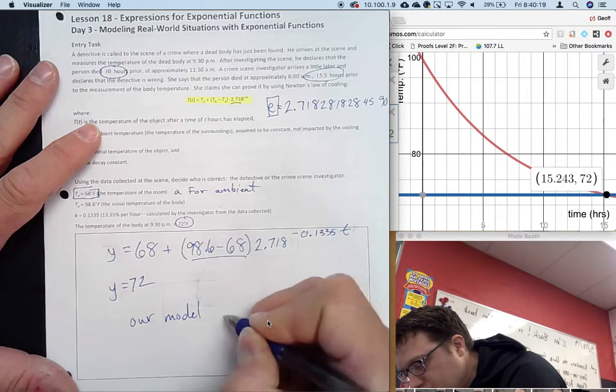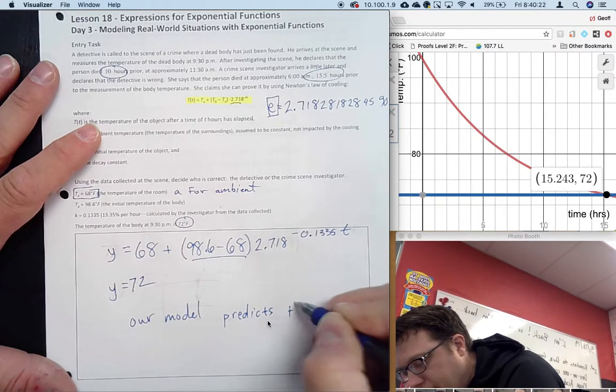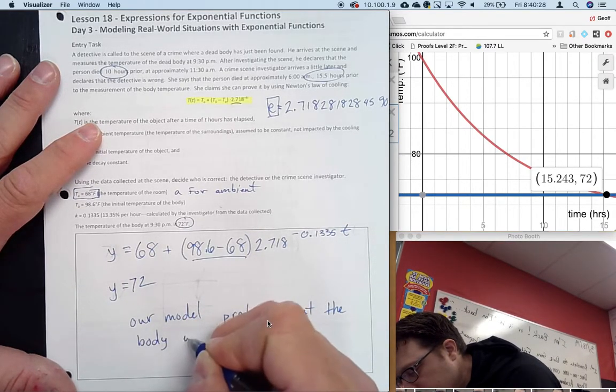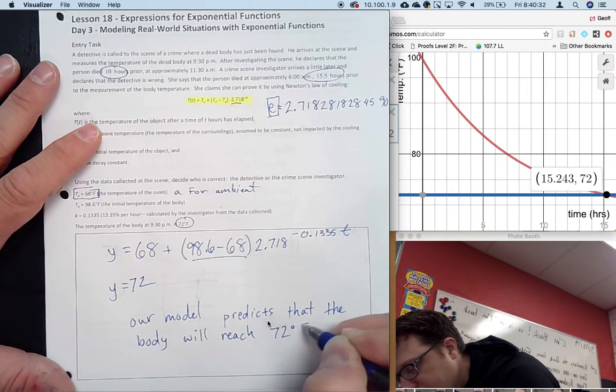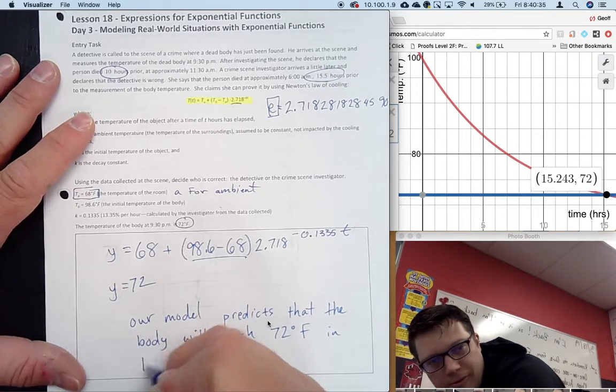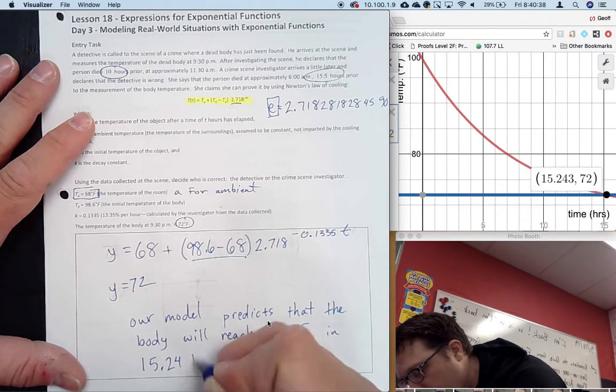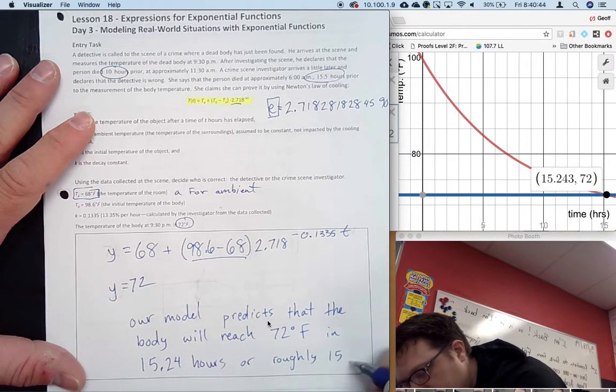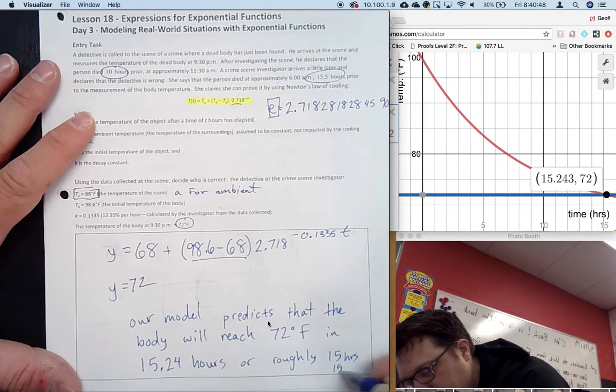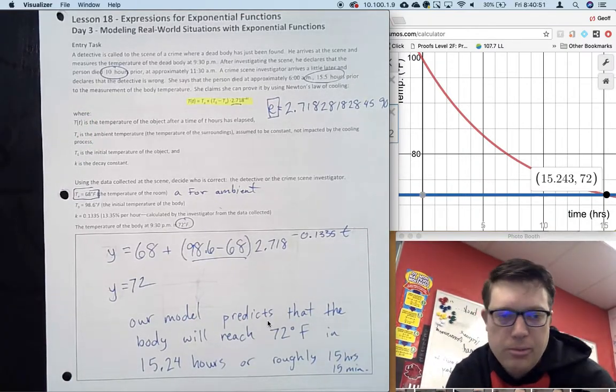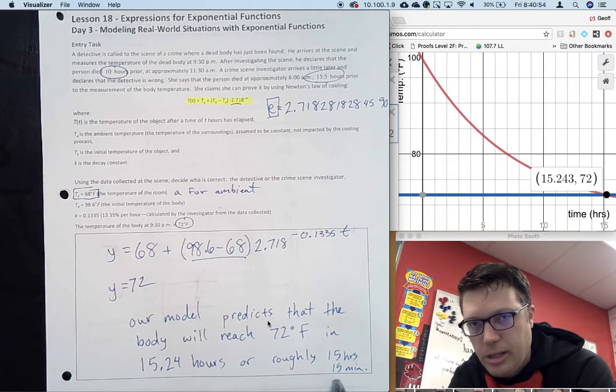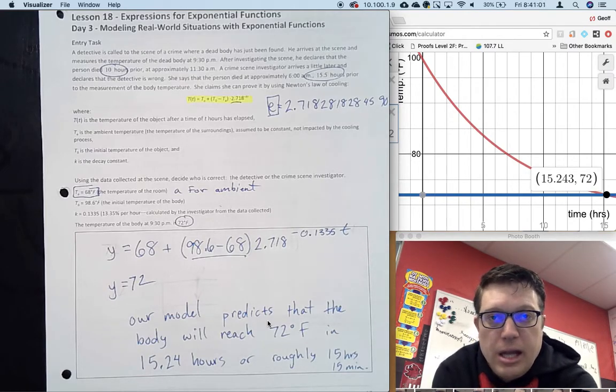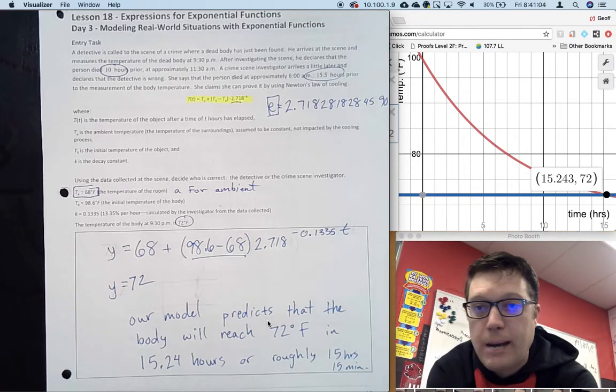The detective is wrong. Our model predicts that the body will reach 72 degrees Fahrenheit in 15.24 hours, or roughly 15 hours 15 minutes. Because 0.25 is a quarter of an hour, 15 minutes is a quarter of an hour. It took approximately 15 and a quarter hours from the time the person died.